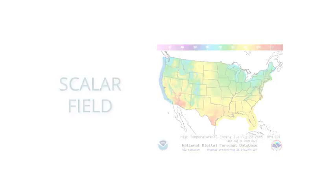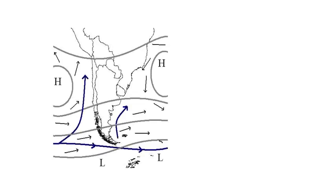In comparison, this weather map of wind, where the value of the wind velocity at each point in space is represented by a vector, is a vector field.